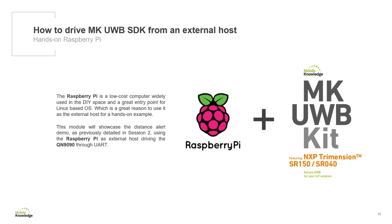The Raspberry Pi is a low-cost computer widely used in the DIY space and a great entry point for Linux-based operating systems, which is a great reason to use it as the external host for a hands-on example. This module will showcase the distance alert demo, as previously detailed in session 2, using the Raspberry Pi as the external host, driving the QN9090 through UART.